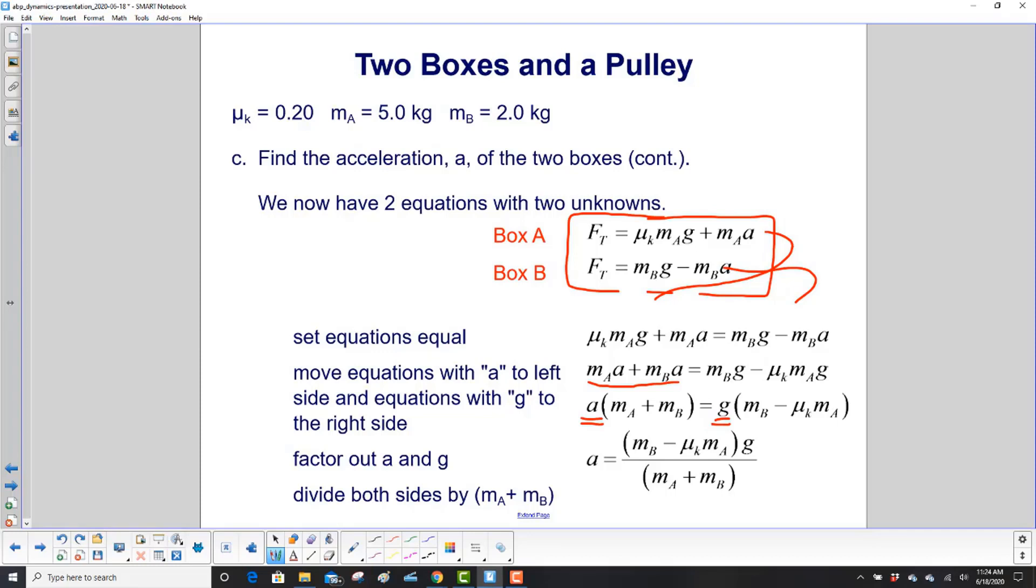One last step. Divide both sides by M sub A plus M sub B. So we totally isolate A. And here is our answer.